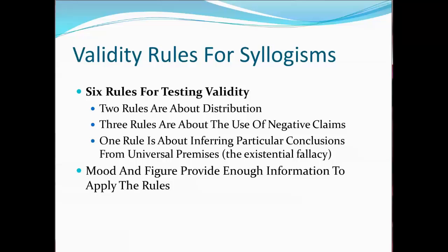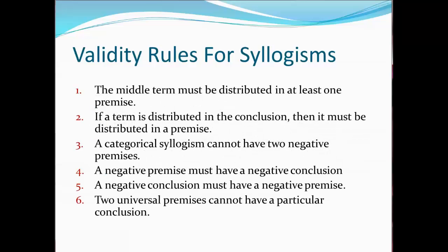Knowing the mood and figure of a syllogism, along with the properties of the four standard claims, provides the basis for applying the rules. There are six rules for testing the validity of syllogisms: two about distribution, three about the use of negative claims, and one about inferring particular conclusions from universal premises. Here are the six rules — we'll go over each rule with examples.